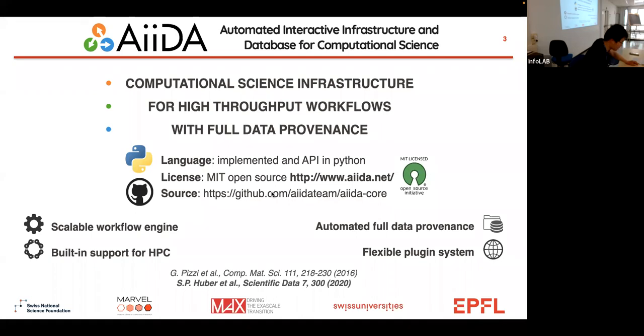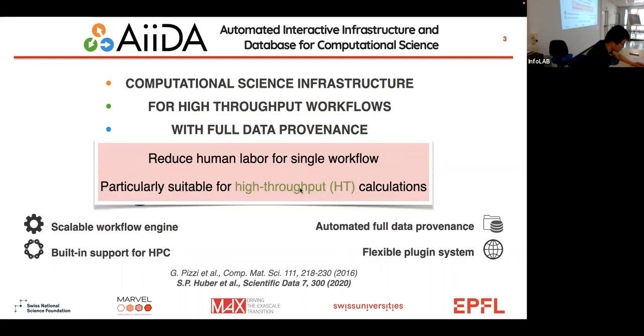The main features of AiiDA: it's a scalable workflow engine, meaning you can submit from several calculations to hundreds of calculations simultaneously. It has built-in support for high performance computing so it can handle SSH connection, upload the files and download files from remote clusters. Moreover, it can automatically generate the full data provenance to make sure your calculations are reproducible even after several years. It also has this flexible plugin system so you can easily integrate third-party codes into your AiiDA ecosystem. In short, AiiDA is a tool to reduce human labor for running workflows and is particularly suitable for high throughput calculations.